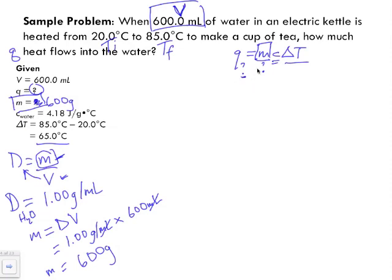Now what we're going to do is substitute into this equation: q equals m c delta T. So q we don't know, m we do know is 600 grams, our c value is 4.18 joules per grams degrees Celsius. This dot here represents multiplied, so grams multiplied by degrees Celsius.